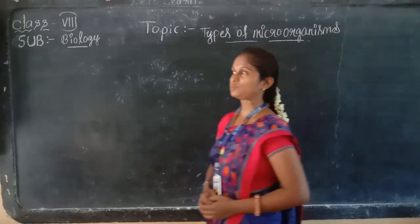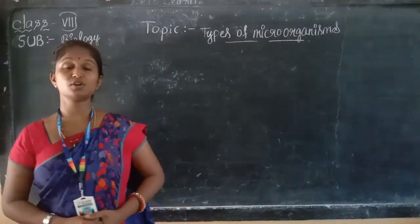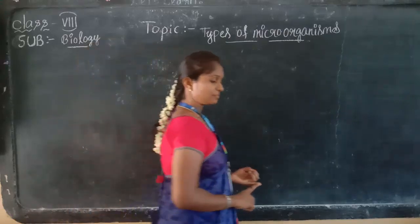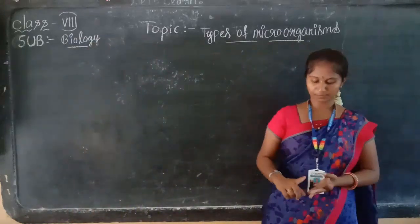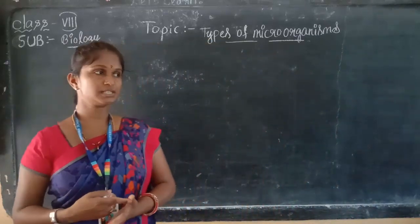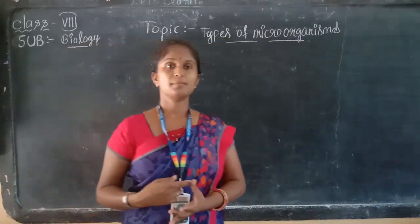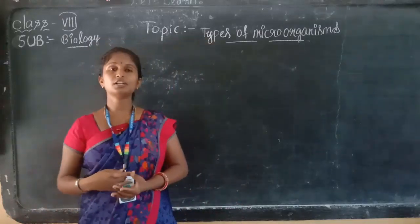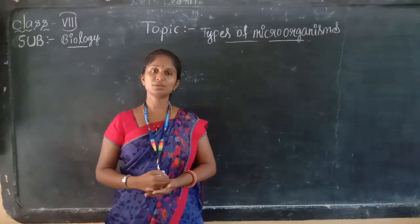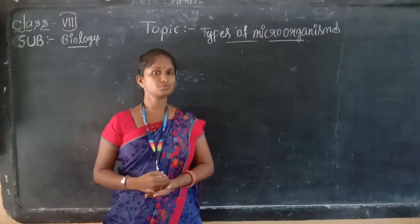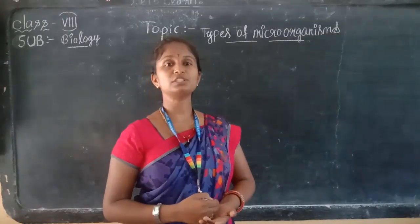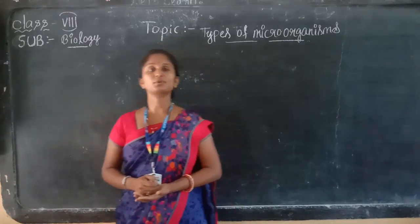In the last class we already discussed about the types of microorganisms. There are five types: bacteria, algae, protozoa, fungus, and viruses. We also discussed the types of bacteria based on shape, and in the last session we discussed about the algae and the protozoa.